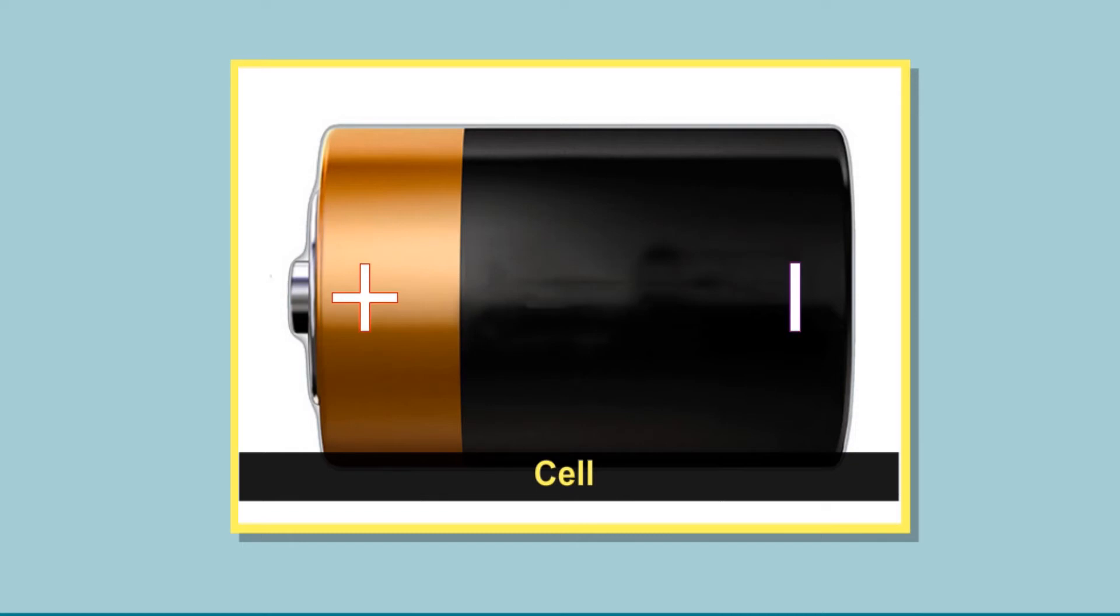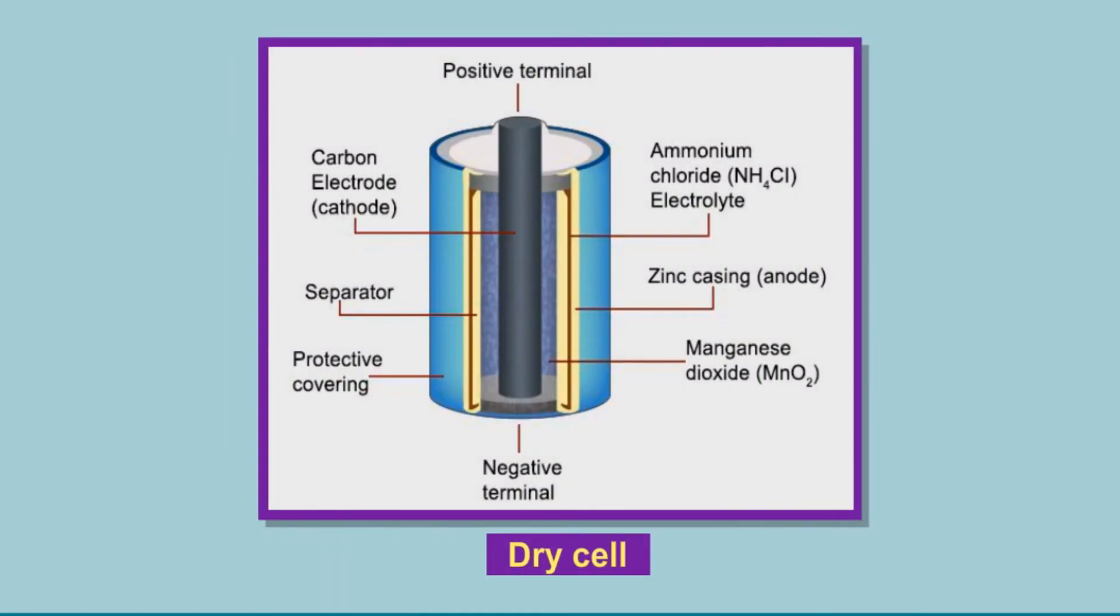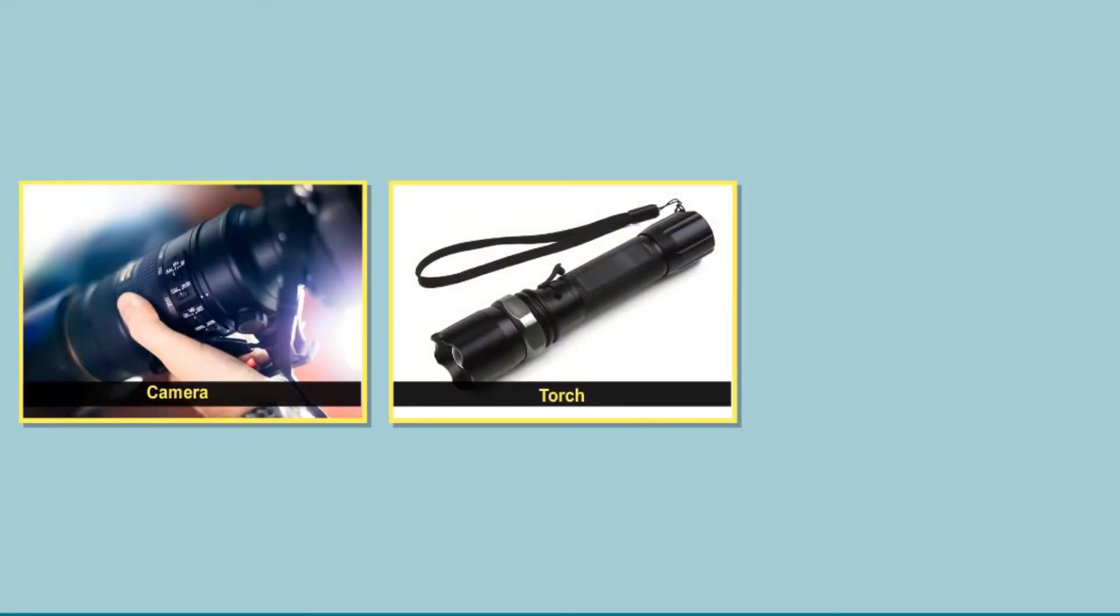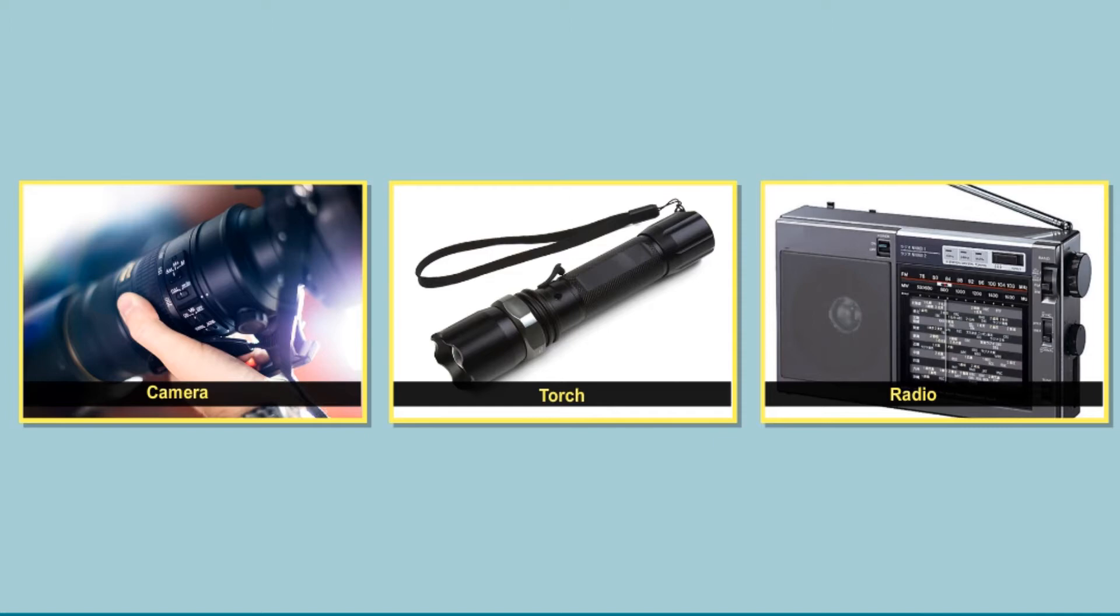The most common electric cell that we use is the dry cell. It is made up of a zinc container which acts as a negative terminal. Inside it contains a paste of chemicals which is connected to the positive terminal through a carbon rod. The dry cell is used in toys, cameras, torches and radios. Dry cell can be used only once, hence it is also called a primary cell.